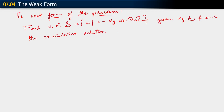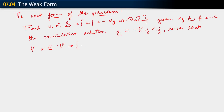Our constitutive relation is j sub i equals minus kappa_ij u sub j. Given all this, find u such that for all w belonging to V, the following condition is satisfied. V consists of functions w where w vanishes on the Dirichlet boundary, satisfying the homogeneous Dirichlet boundary condition.